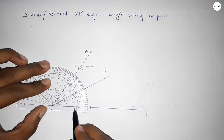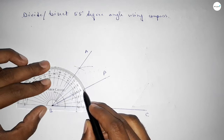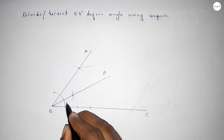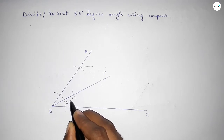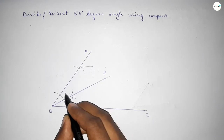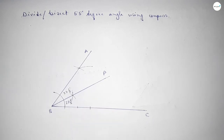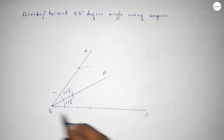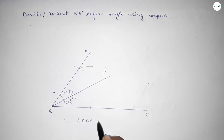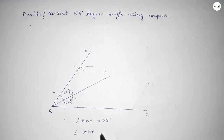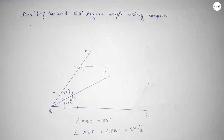Now checking whether it is correct or not — this is 27 and a half degrees, so this is perfect. Therefore, angle ABC equals 55 degrees, and angle ABP and angle PBC each equal 27 and a half degrees. That's all — thanks for watching. If this video is helpful, please like and subscribe.